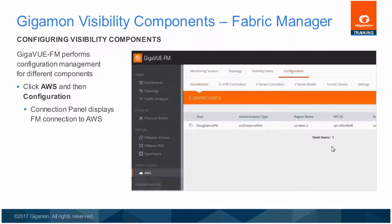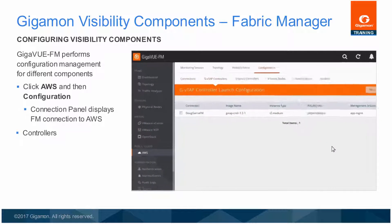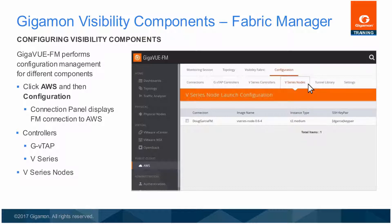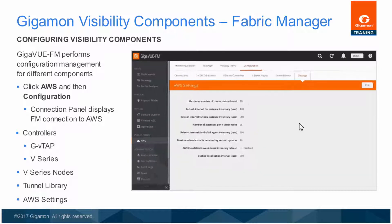In the Connections window, the connection from the FM in AWS is displayed. To display or configure the controllers, click GV Tab Controllers and V-Series Controller tabs. To display or configure the V-Series Nodes, click V-Series Nodes. To display or configure the tunnel which carries traffic from the V-Series Nodes to the tools, click Tunnel Library. Click Settings to display or configure the maximum number of connections, refresh intervals for instance and non-instance inventory, maximum batch size for monitoring session updates, and information on how to enable CloudWatch.